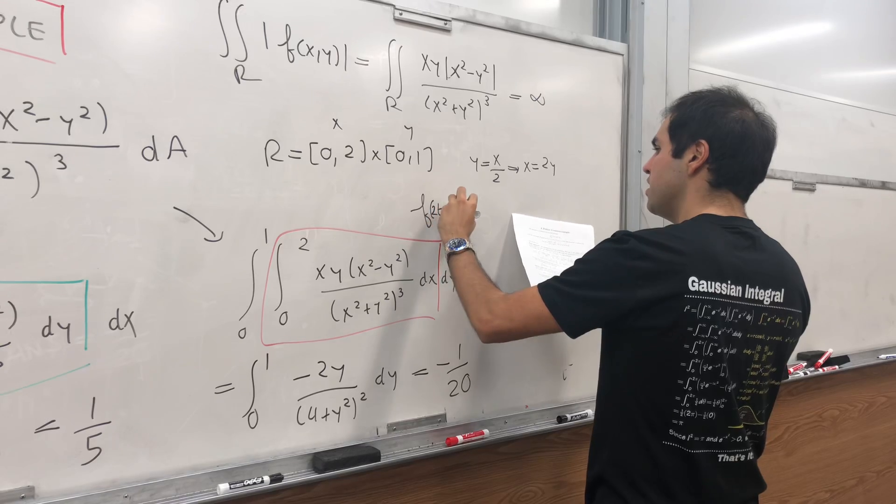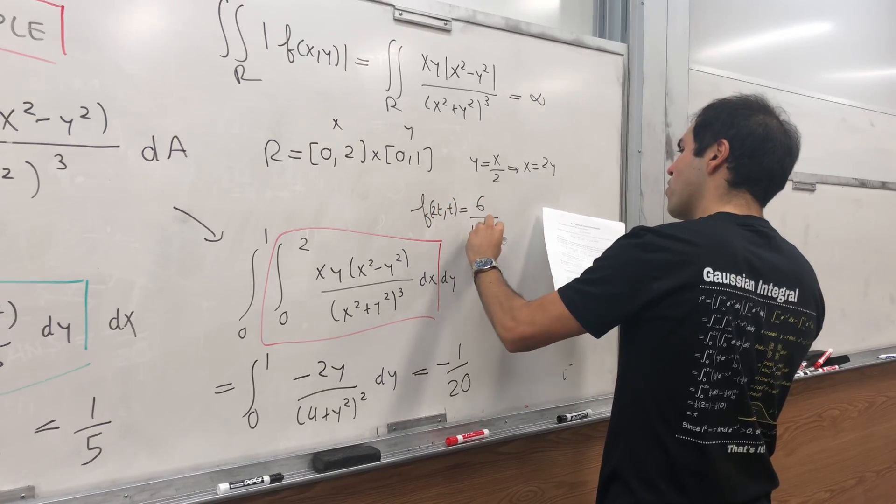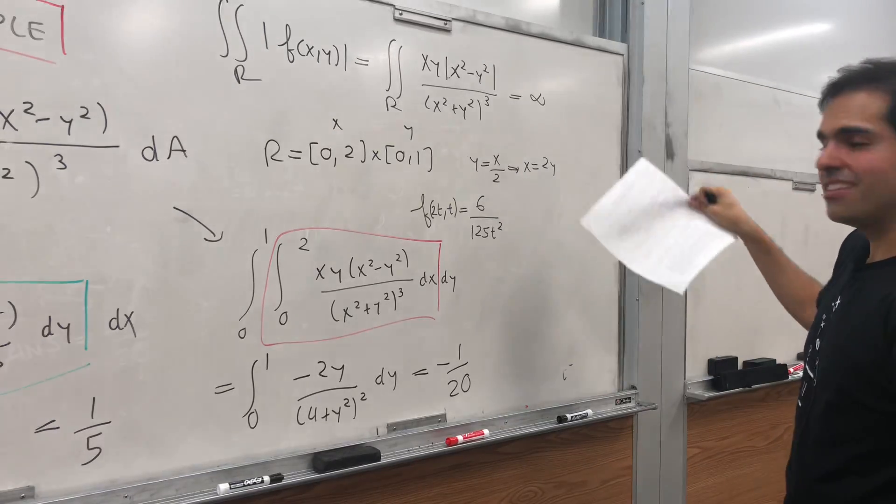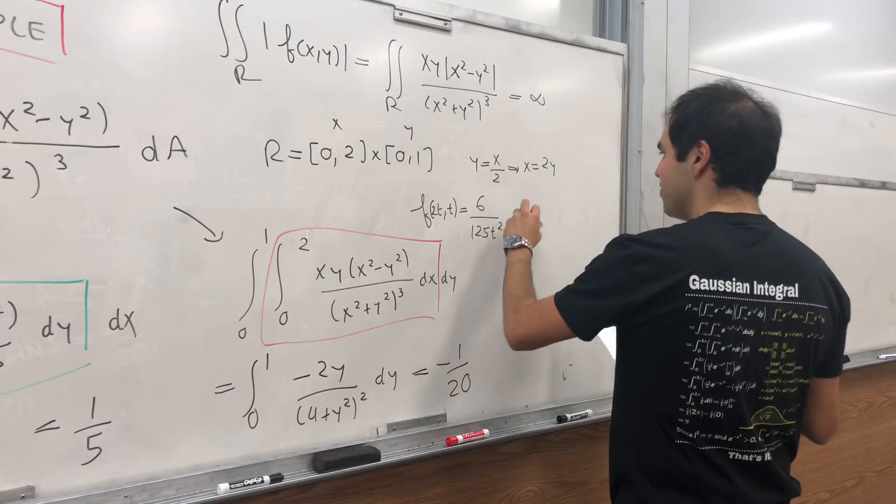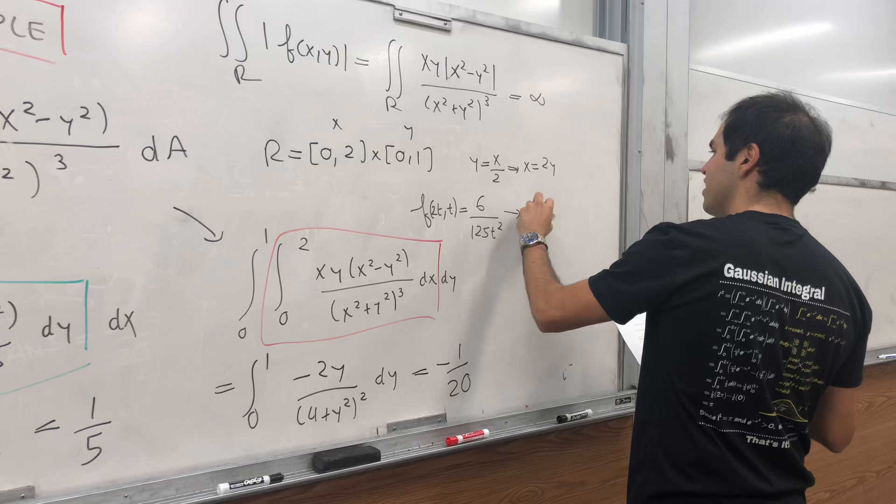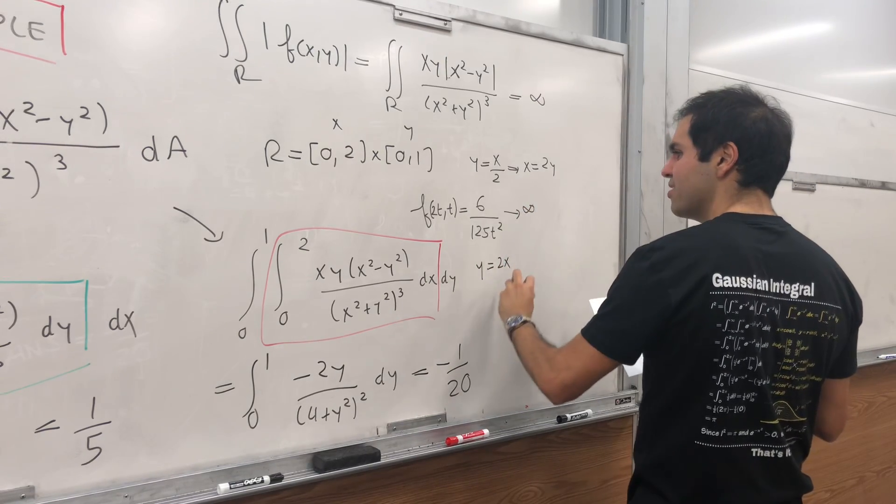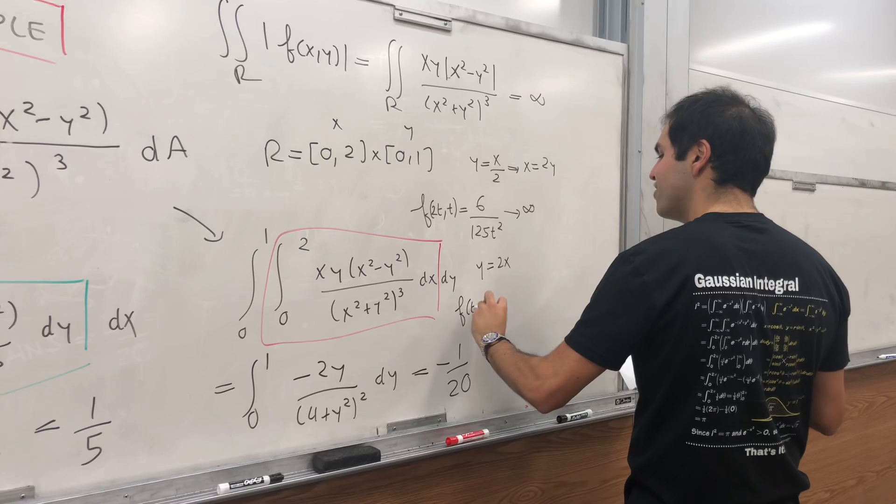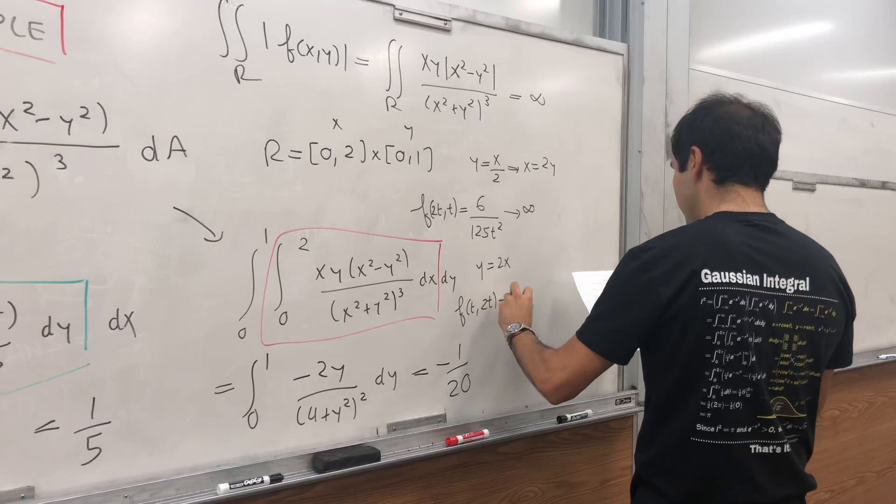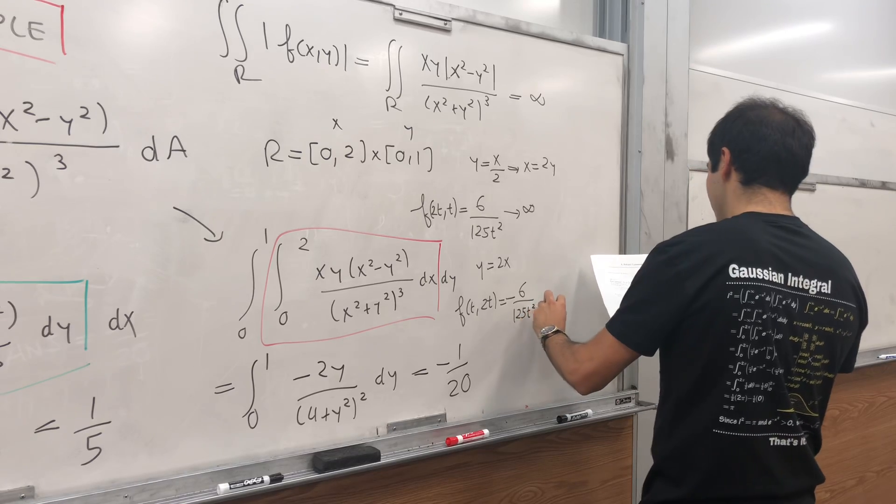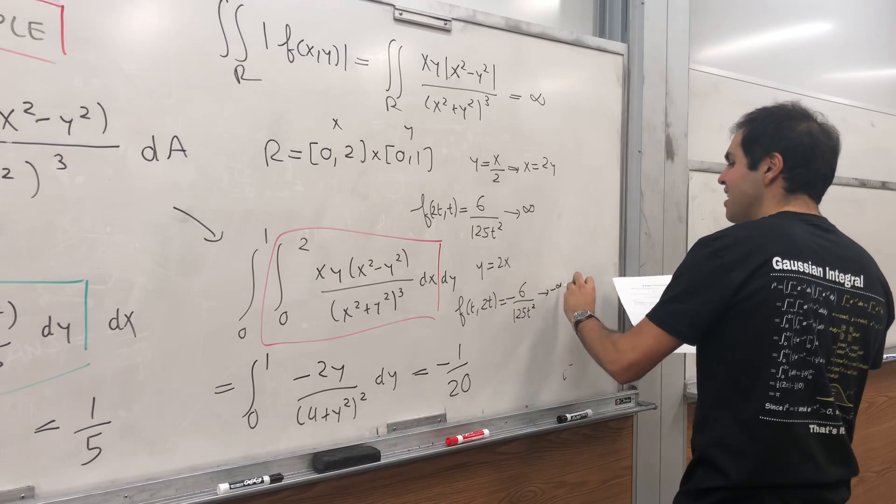whereas on the line y equals 2x, our function f(t, 2t) you can calculate it as negative 6 over 125t squared, which blows up to minus infinity.